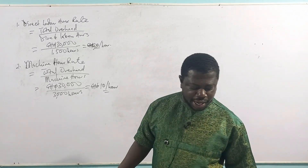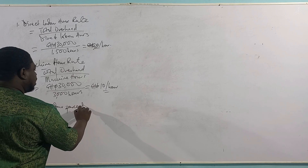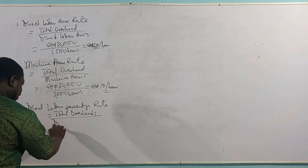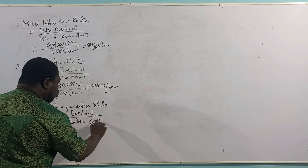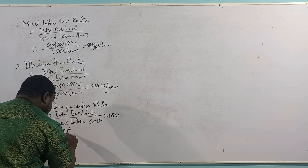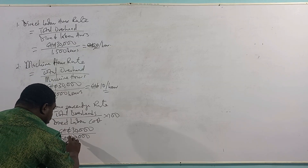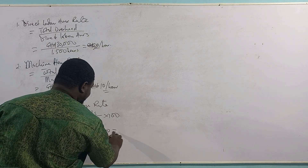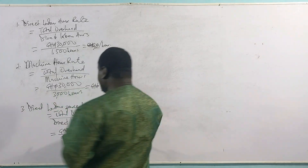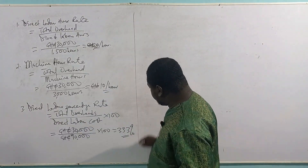Let's look at the percentages — starting with the direct labor cost percentage rate, the third formula. The formula is: total overhead ÷ direct labor cost × 100. This time it is the cost, not the hours. The total overhead is 30,000 Ghana cedis and the total direct labor cost is 90,000 Ghana cedis. Therefore: 30,000 ÷ 90,000 × 100 = 33.3%. This is in percentage because the currency signs cancel each other out.